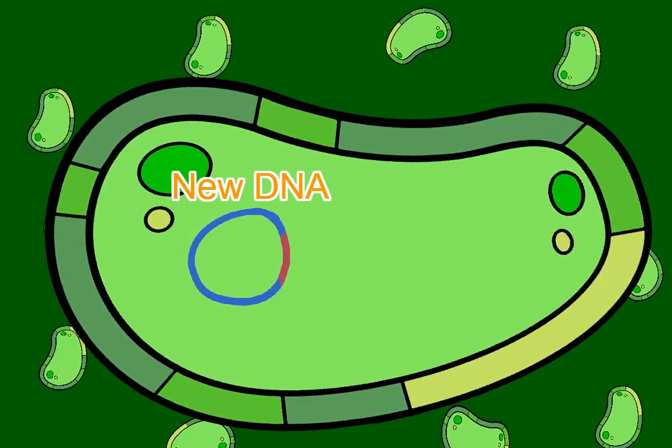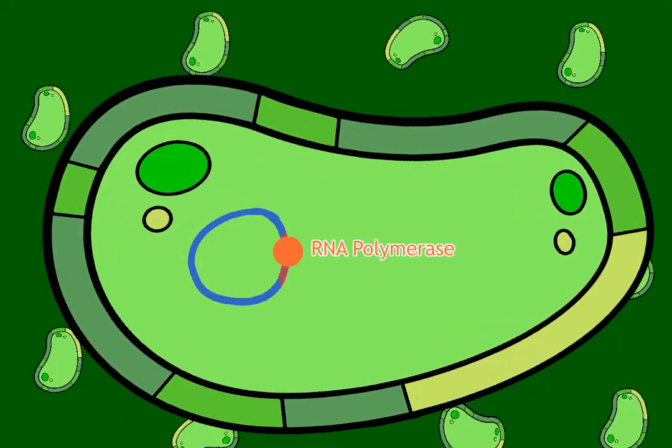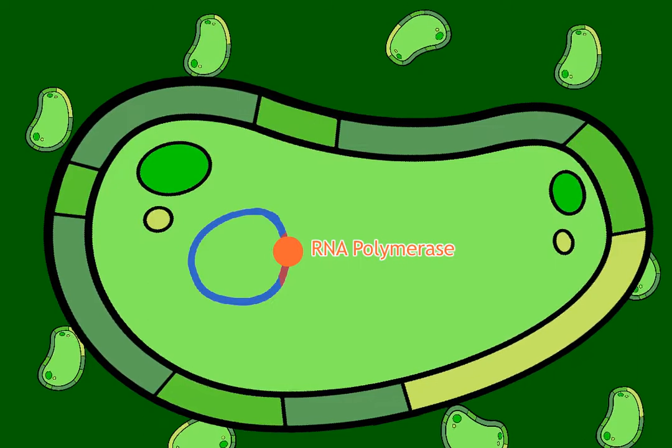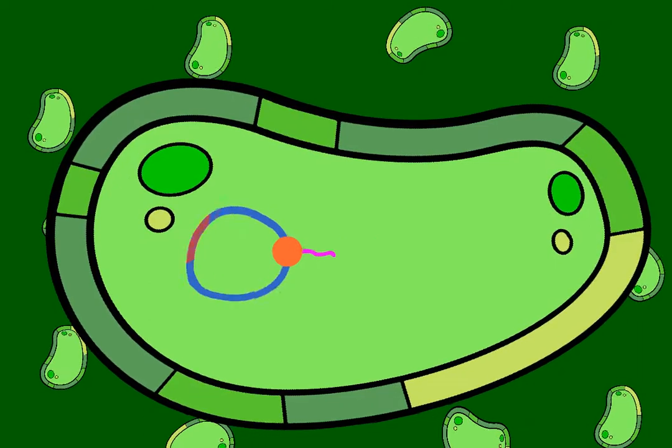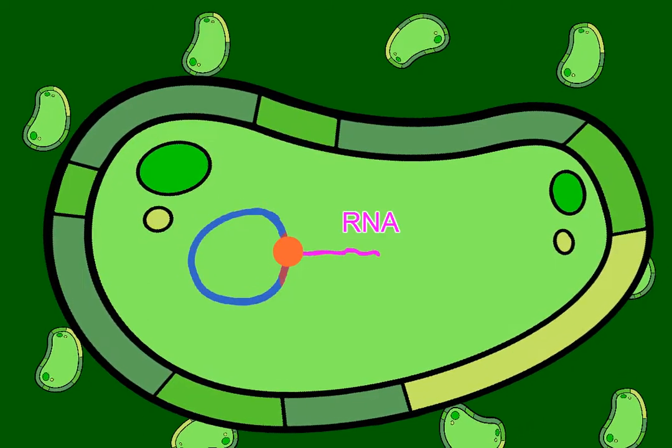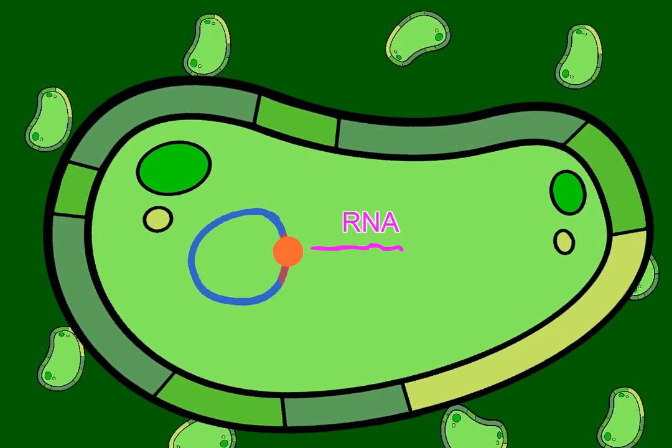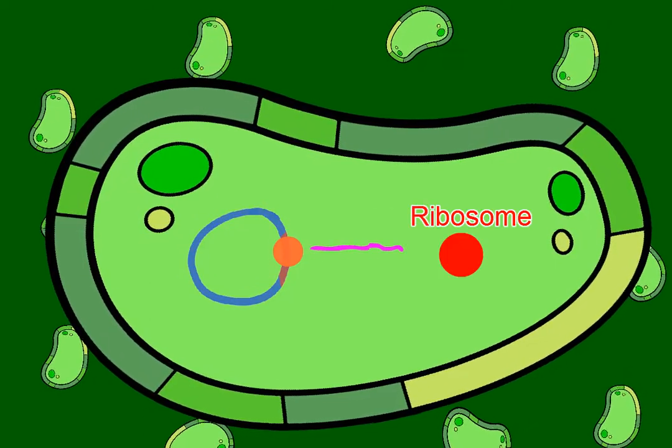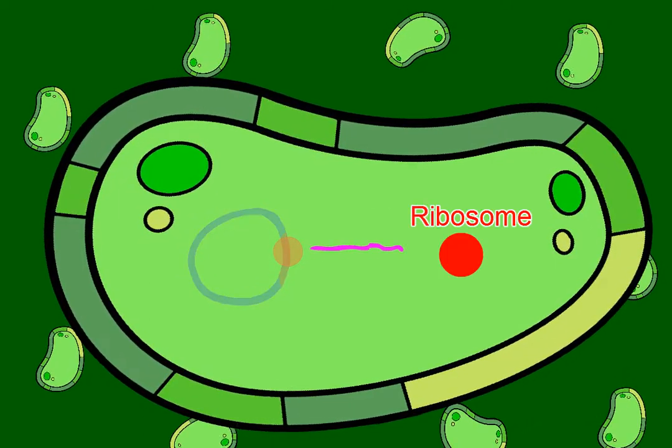Once again, the RNA polymerase makes an RNA copy of the DNA. A ribosome reads the RNA and creates our new protein.